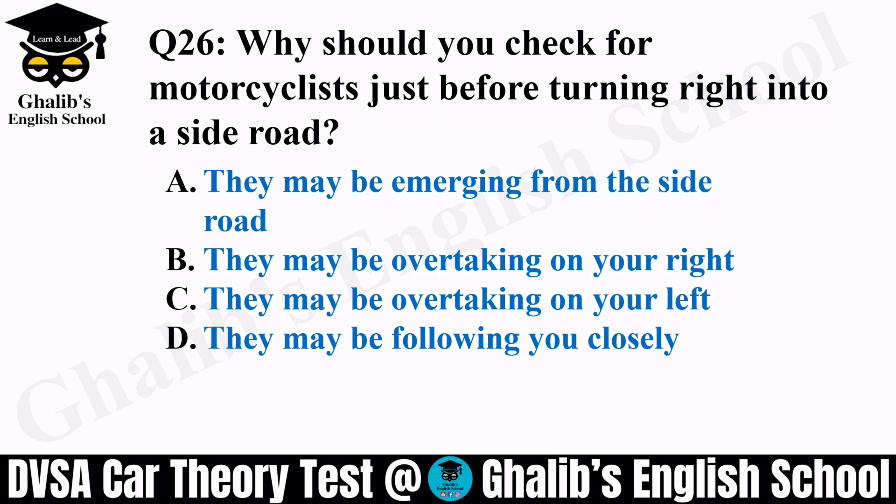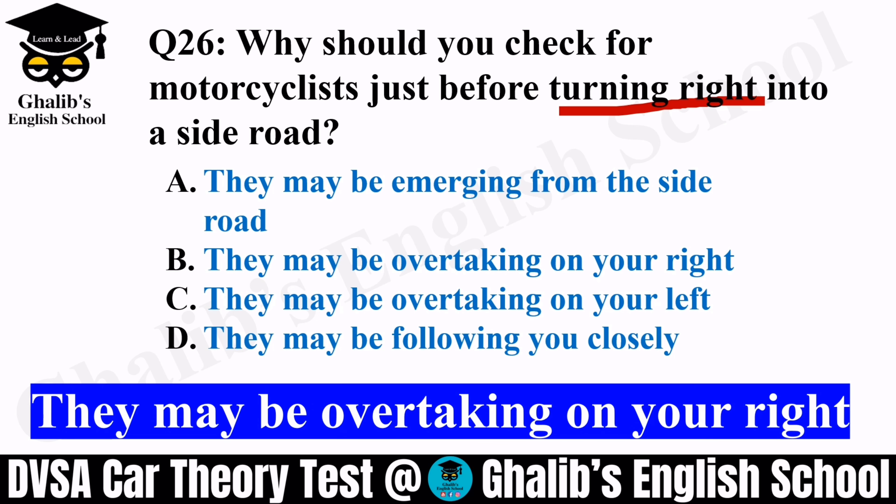Question 26. Why should you check for motorcyclists just before turning right into a side road? Options: they may be emerging from the side road, they may be overtaking on your right, they may be overtaking on your left, or they may be following you closely. Motorcyclists are always overtaking on the right. So before turning right, give a signal, confirm it, do all observations, check your mirrors and your blind spot.